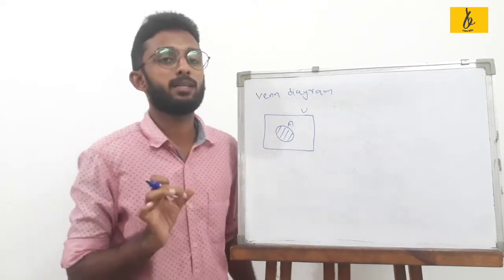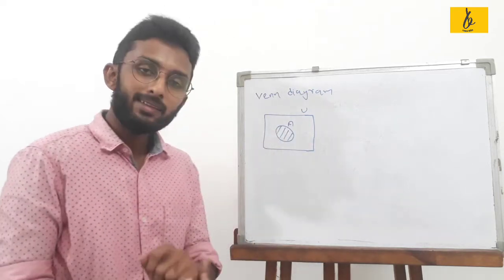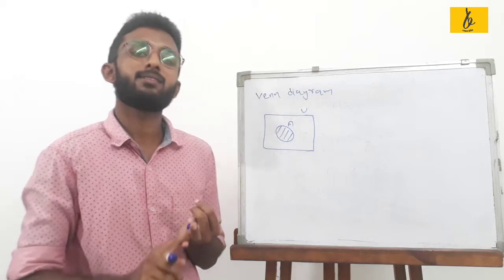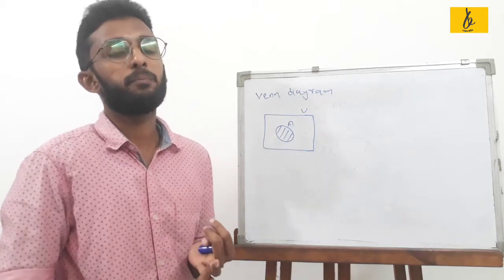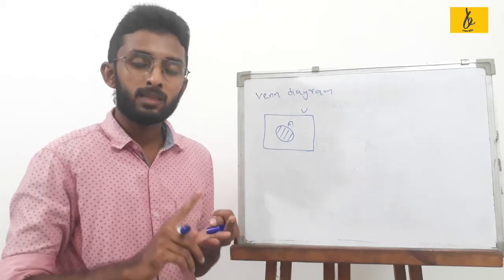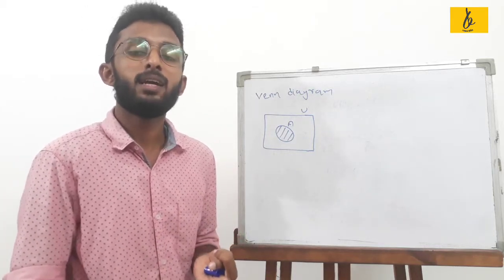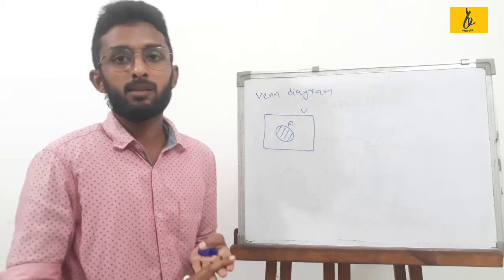Using a Venn Diagram, we can represent operations on sets such as union, intersection, and subtraction.